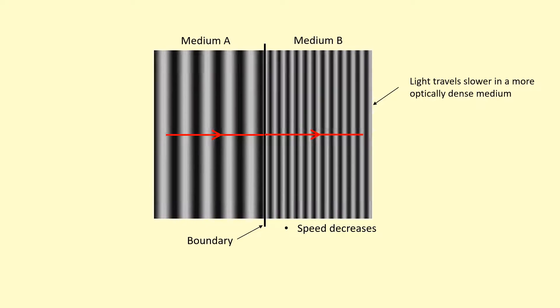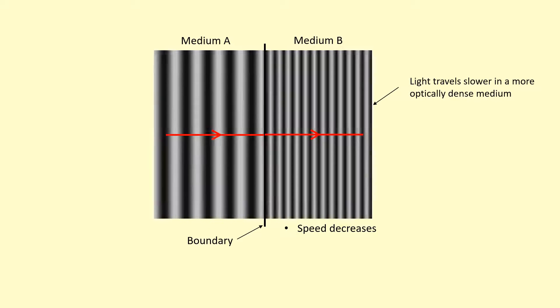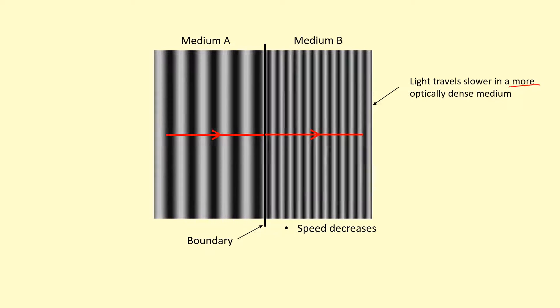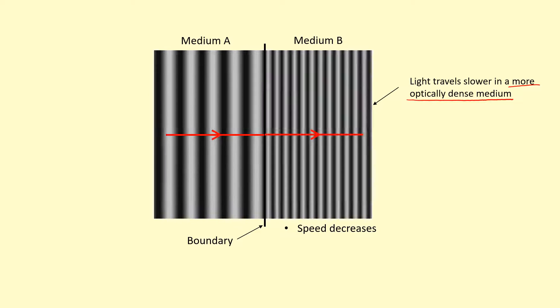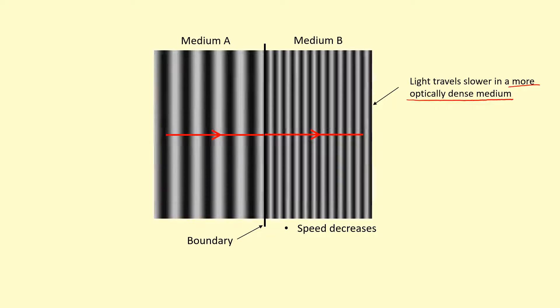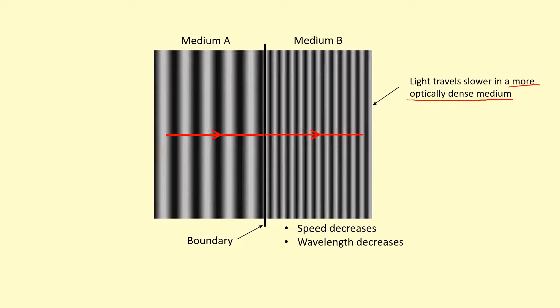The waves on the right-hand side are moving more slowly. If this was light, we'd say that the medium B is more optically dense. Okay, so that's slowed the waves down. What else has changed? You can see the distance between the wavefronts is shorter on the right-hand side. That's because the wavelength has decreased.